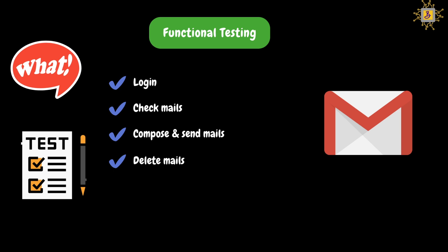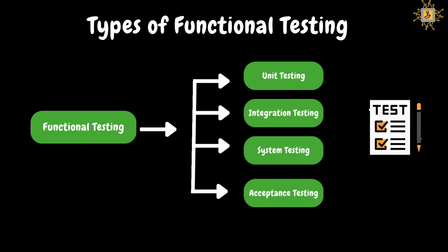I hope you got some idea about functional testing. If you have any questions, don't hesitate to mention it in the comment section. Now let's look at different types of functional testing. Basically, there are four types: unit testing, integration testing, system testing, and acceptance testing. Now we will look at more about these testings.